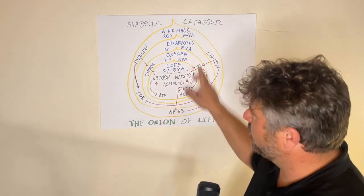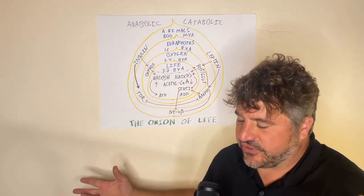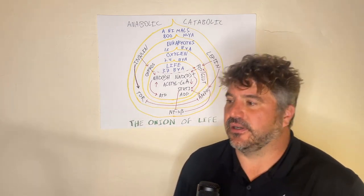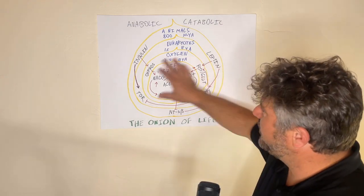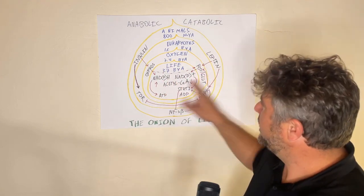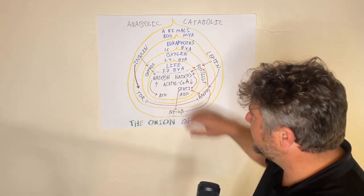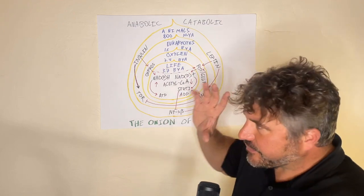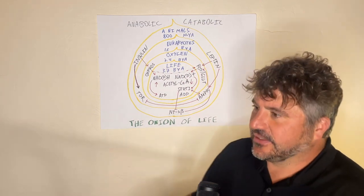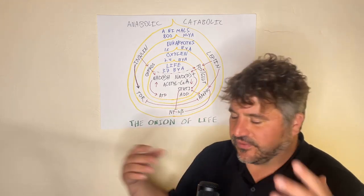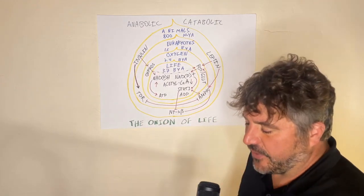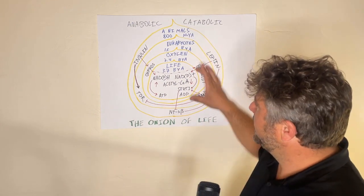Life evolved with this core program. The oldest things — you go through all the branches of life: archaea, which are weird bacteria, regular bacteria, fungi, humans — we all have these things in common: NADH and NAD+, NADPH and NADP+, acetyl-CoA, sirtuin enzymes, ATP and ADP. These are the core bits of energy and building blocks of life that all cells use. Literally every cell — you can find some organism living in a thermal vent that maybe doesn't use NAD+ because it doesn't work at super high temperatures — but generally speaking, all of life runs these things.